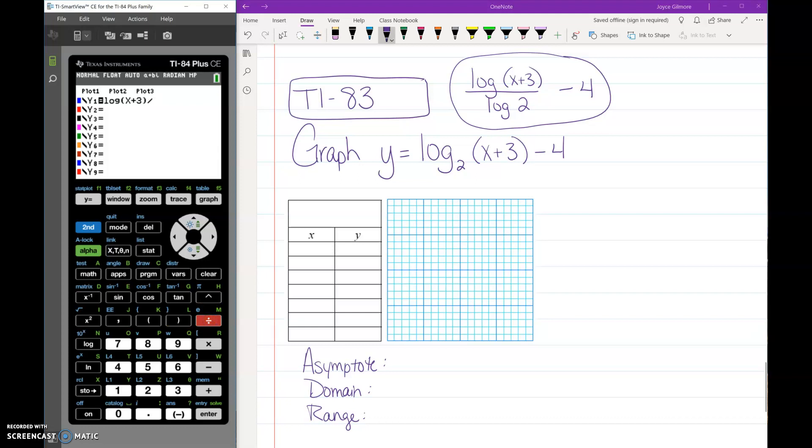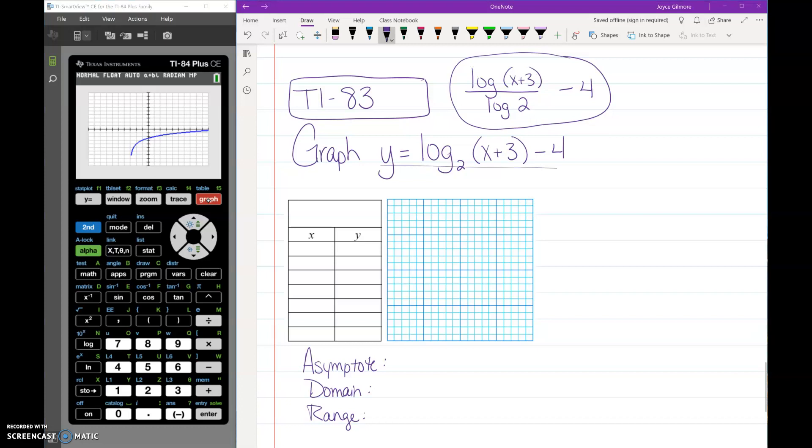Divided by log button 2, close your parentheses. That is this fraction log of x plus 3 divided by log of 2. After that, you put minus 4, and it will graph the function exactly the same as this statement in a TI-84.